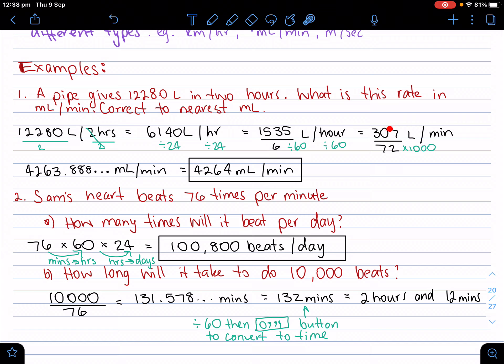Now I left it as a fraction because that's the exact form. I want to round it off right at the end, not in my working out. So if that's how many liters it is, now I'll convert that to milliliters by multiplying by 1,000. Correct to the nearest milliliter, I round that off, and I get 4,264 milliliters per minute.